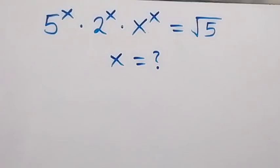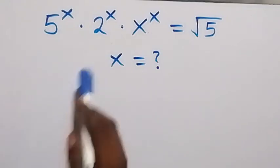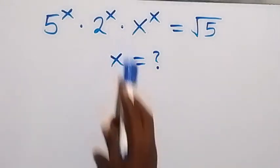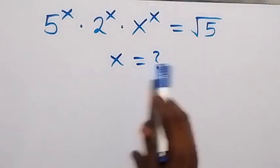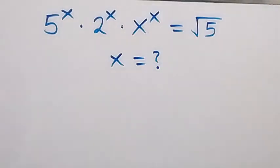Hello, you are welcome. How to solve this nice exponent math problem? We have 5 raised to power x times 2 raised to power x times x raised to power x equals to root 5.